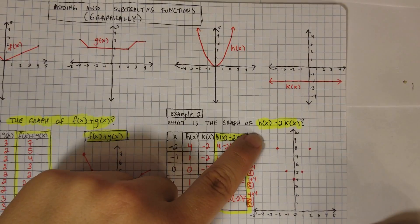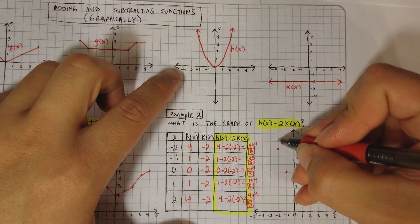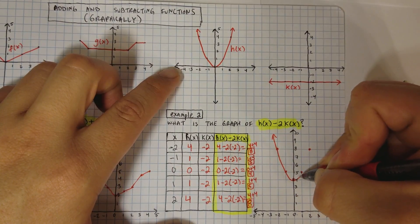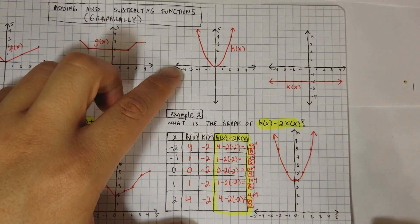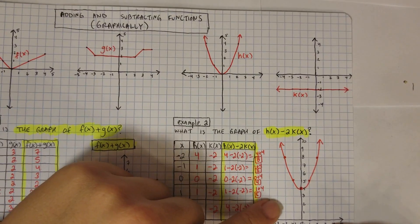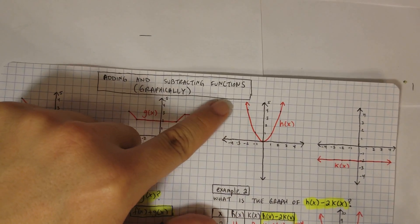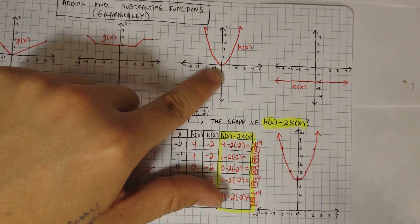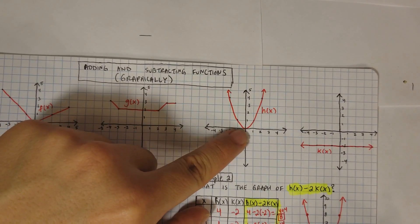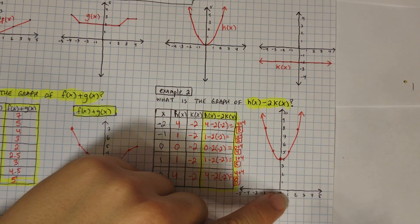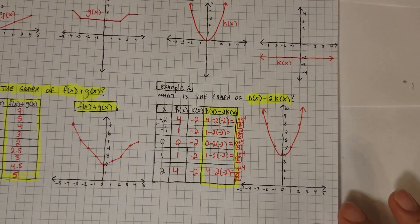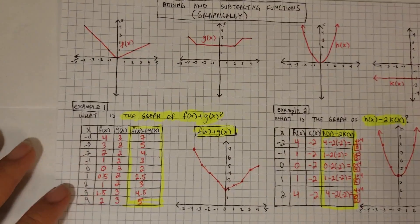The graph of h(x) minus 2 times k(x) looks like this. If you notice, the original graph of h(x) is kind of the same shape, but it looks like it got moved up quite a bit — this is called a parabola, like the letter U. It looks like it got shifted upward about 4 units. The original was at the origin, and now it's 4 spaces above. I hope this video was helpful for adding and subtracting functions graphically — see you on the next one.